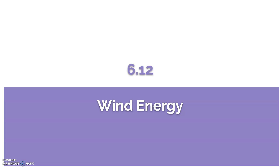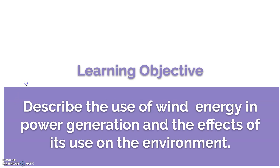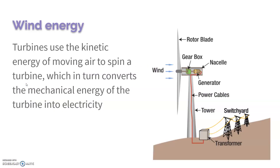In 6.12 we're going to talk about wind energy. The way it works is that it uses wind to spin a turbine, and that turbine is hooked to a generator, and that generator does the fancy magic physics to create electricity. It's the same system we've seen over and over again — you have a turbine and you just need something to move it.